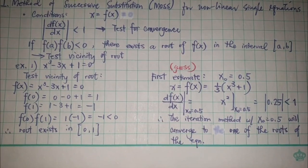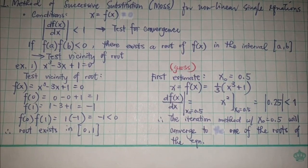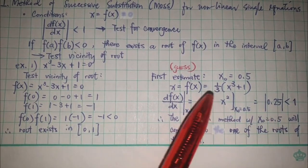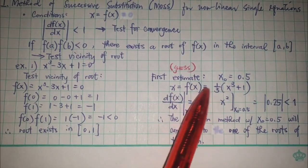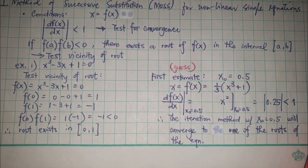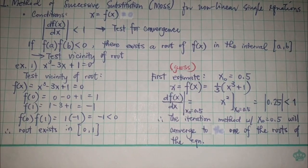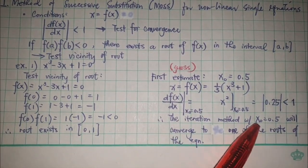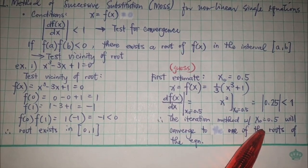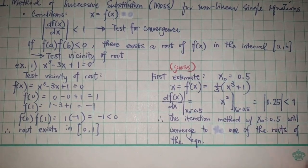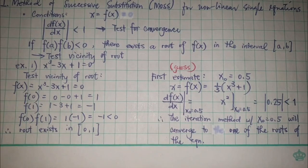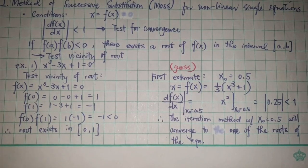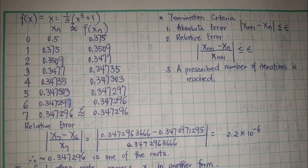When you plug in x = 0.5 squared, you'll get 0.25. One of the termination criteria was that the answer should be less than 1. Meaning, the iteration method with x₀ = 0.5 will converge to one of the roots.